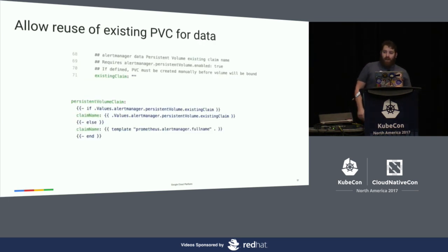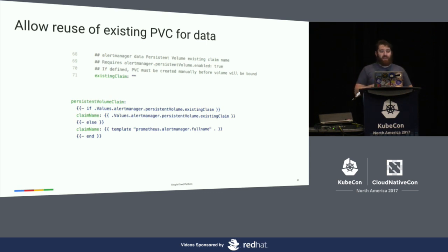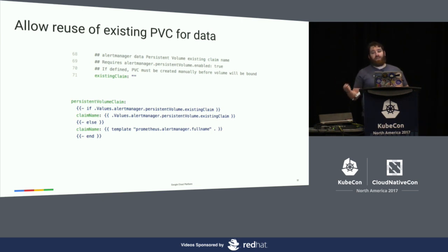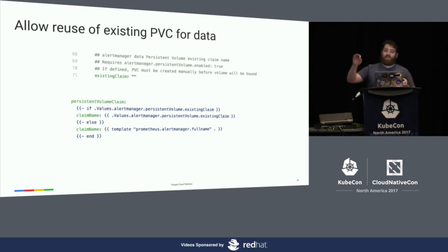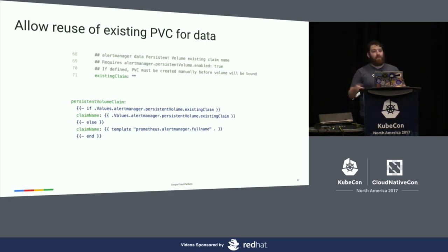Something we first saw in the Prometheus chart is allowing people to provide a volume for data — letting them provide the name of an existing persistent volume claim. If they provide that, you use it rather than one you would have originally provisioned in the chart. You may need to decouple your chart lifecycle from your data lifecycle. Maybe you don't want someone to accidentally delete data, or a developer has a PVC that's their special dataset they want to reuse with your chart over and over.